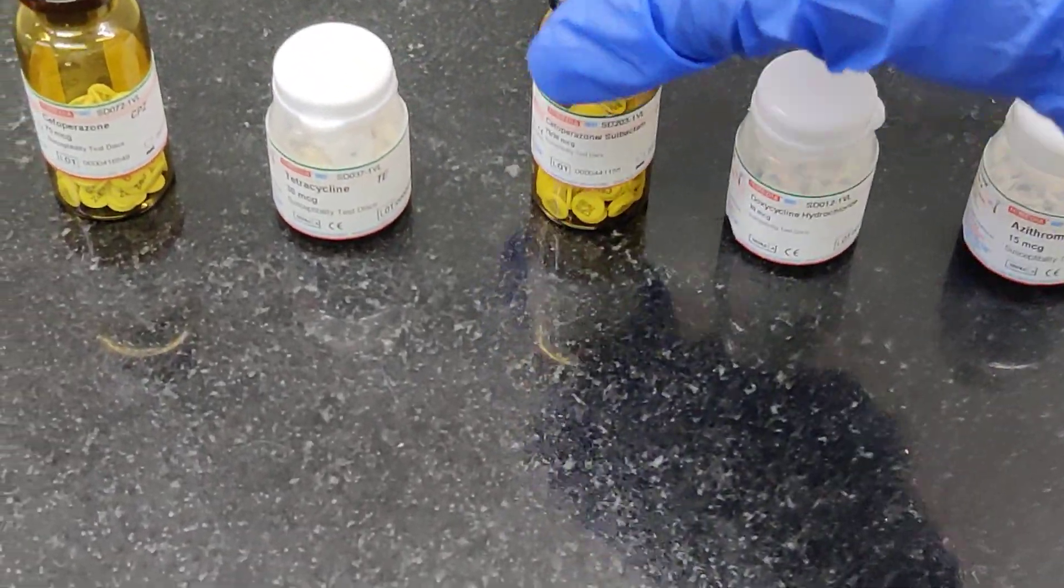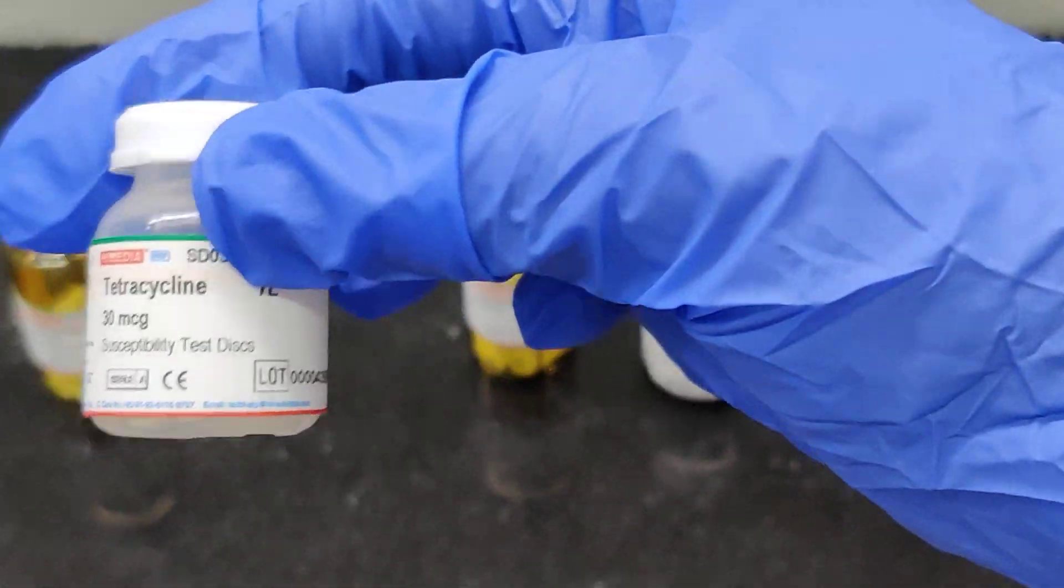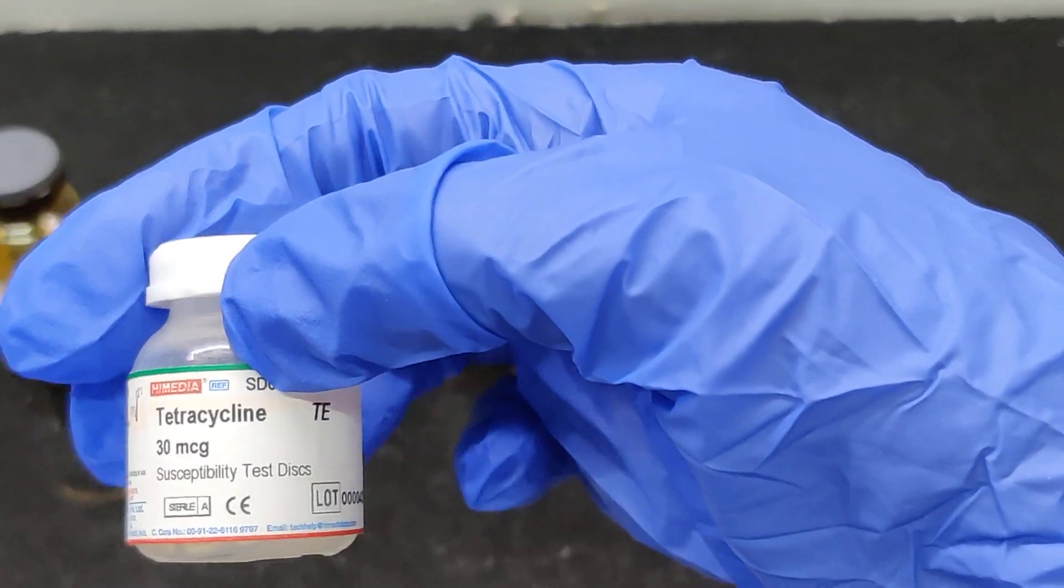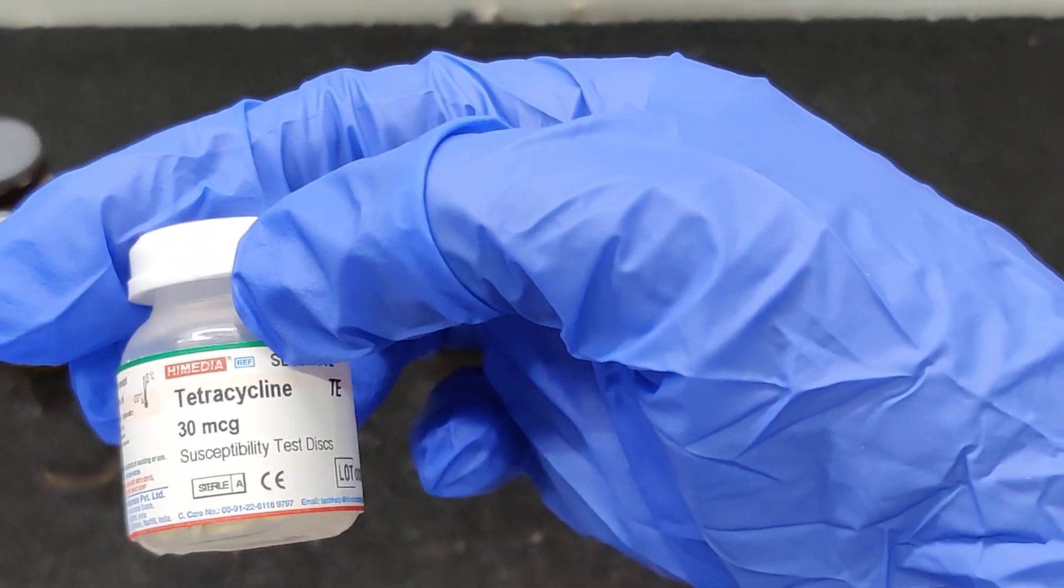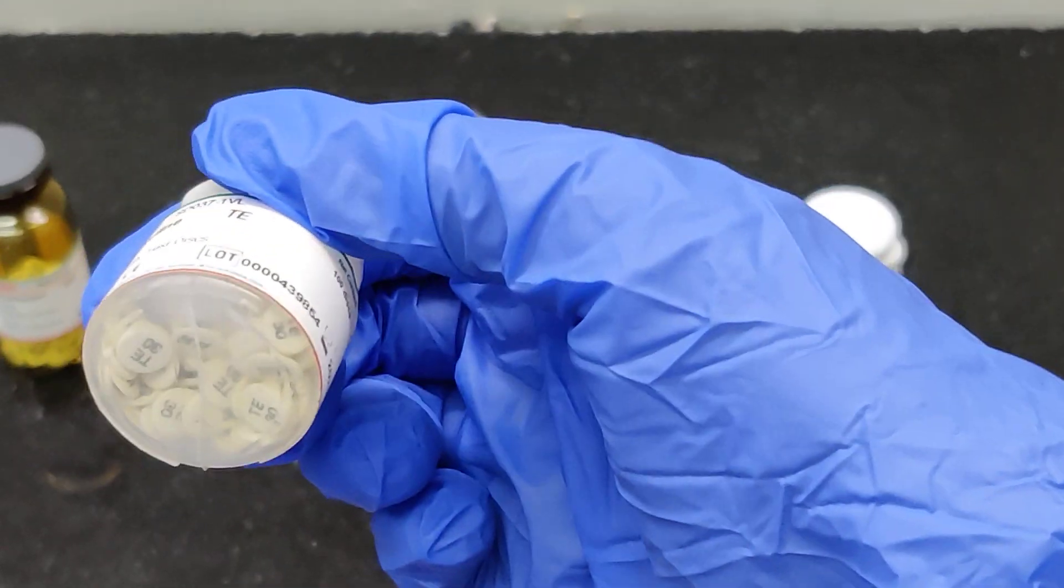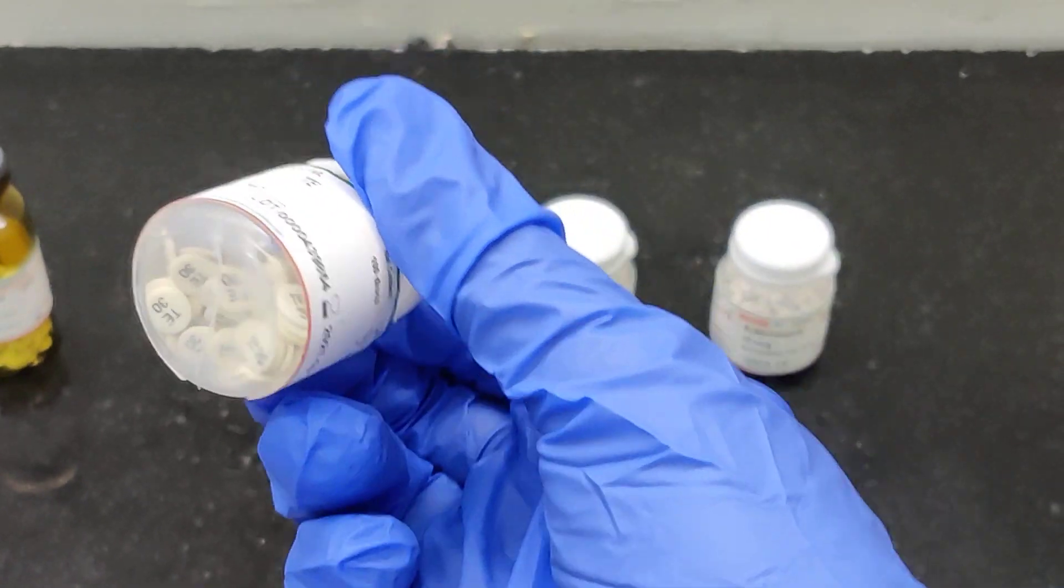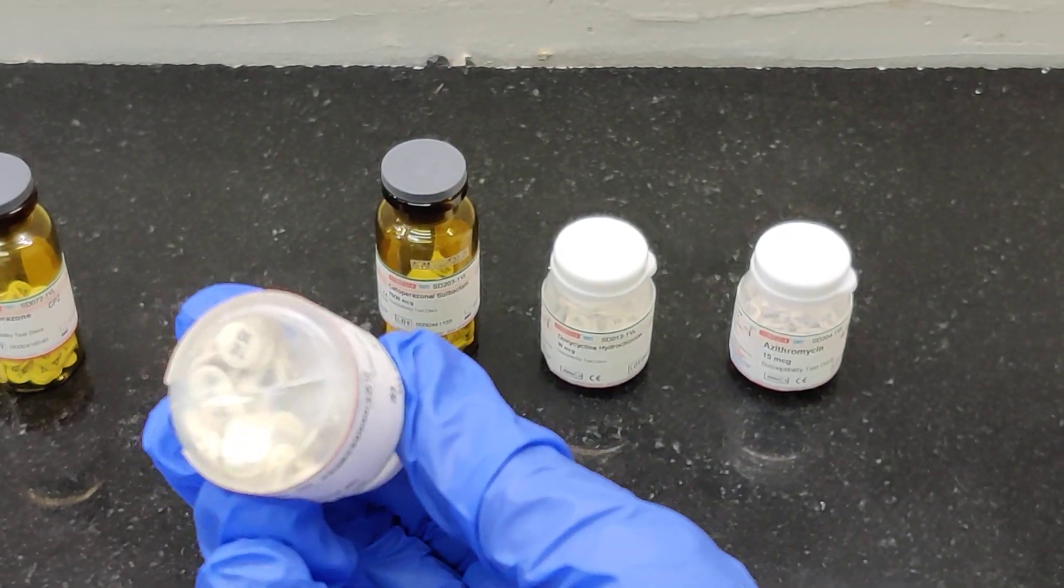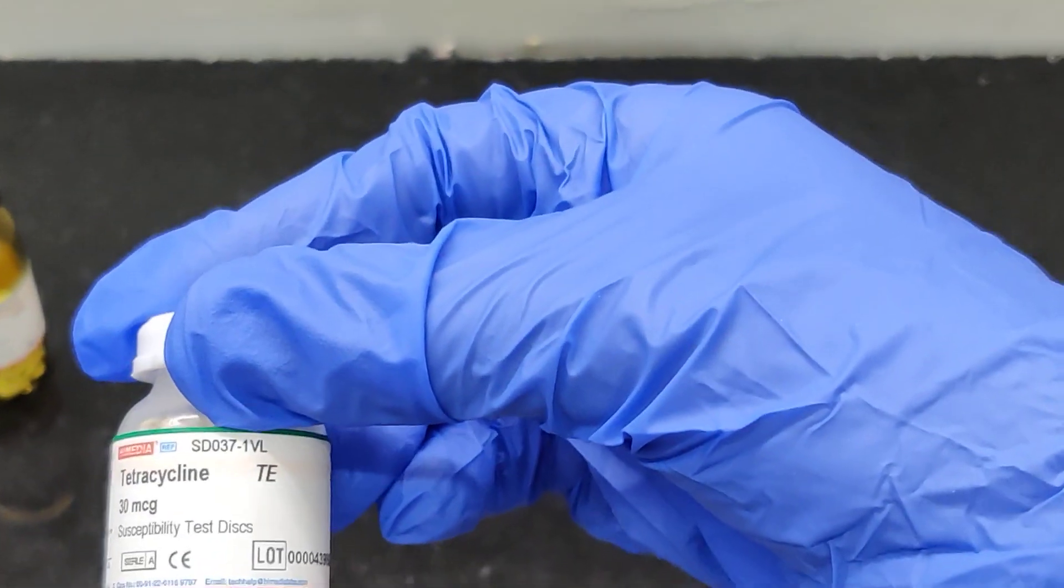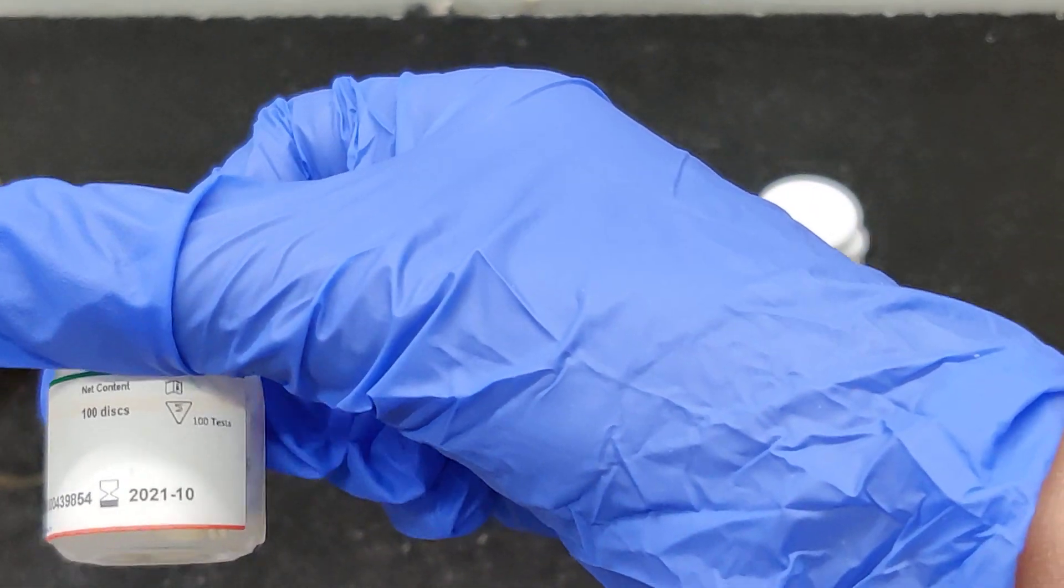This is another bottle of another antibiotic disc, that is tetracycline 30 microgram. TE is the short form. Every disc is going to be engraved with the short form TE, as you can see here, along with the number 30, which represents the quantity of the antibiotic.